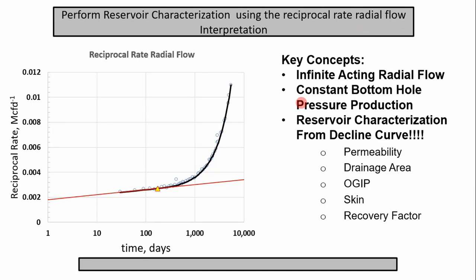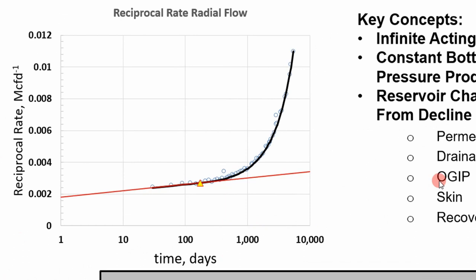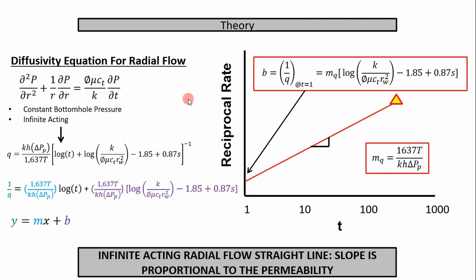The goal today is to perform reservoir characterization using the reciprocal rate radial flow interpretation. From this reciprocal rate versus log-of-time graph, we can get permeability, drainage area, original gas in place, skin, and recovery factor — pretty much everything we want as a reservoir engineer. The key assumptions are: the reservoir drains a cylindrical drainage area, and you're producing at constant bottom hole pressure during the infinite acting region.